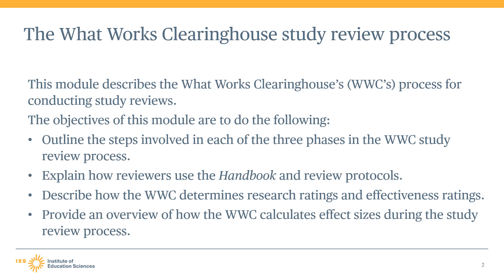In this module, we describe the WWC's systematic review process, which is used to identify relevant research studies that assess the effectiveness of an intervention, review those studies against the WWC design standards, and summarize the findings. We will also describe how WWC reviewers use the handbook and protocols to guide their study reviews, and how the WWC determines the research ratings and effectiveness ratings used to report on findings and conclusions from reviewed studies. Finally, we will provide a high-level overview of how the WWC calculates effect sizes during the study review process, explaining how these effect sizes are used to indicate the size or magnitude of an intervention effect.